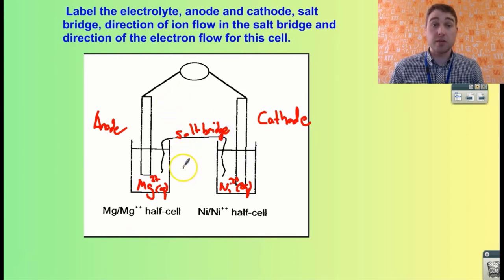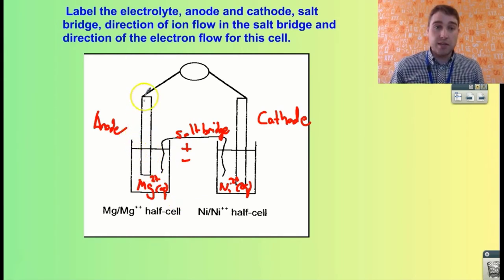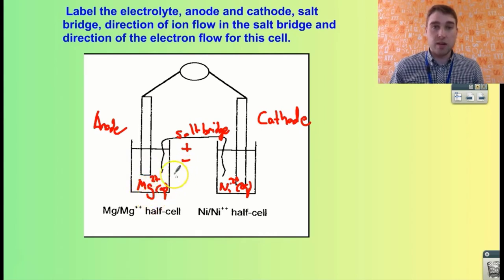Then we need the direction of ion flow in the salt bridge. There's going to be a positive ion and a negative ion, and we need to determine which side they go to. As the magnesium over here is oxidized, you get an increase in concentration of magnesium ions in the solution, in the electrolyte. That gives it an overall positive charge. So to get rid of that overall positive charge, the negative ion in the salt bridge has to go in that direction, into the magnesium electrolyte.